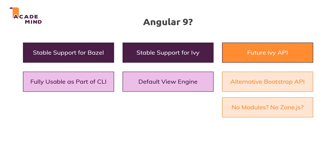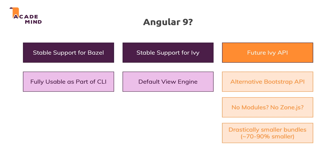If you fully adopt the new API, Ivy should produce bundles up to 70 to 90 percent smaller. At ng-conf in early May, a chart was shown with the goal of producing a simple Hello World Angular app that's only 14 kilobytes — about 90 percent smaller than a normal Angular 7 Hello World app. It's too early to tell exactly what will change, but it's really exciting. We'll see how Angular 9 really is when it's released, and until then, enjoy Angular 8.